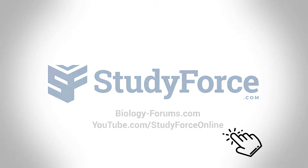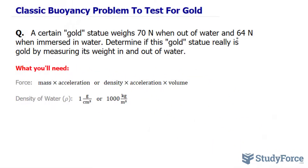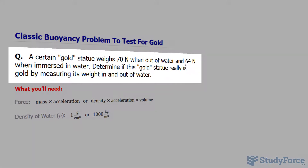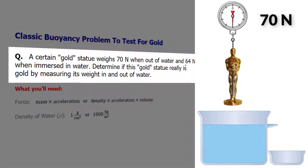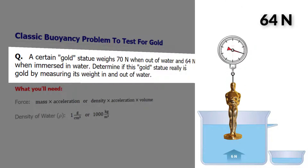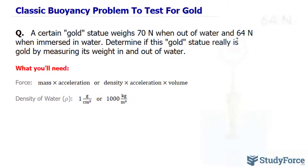In this lesson we'll look at a classic buoyancy problem involving how to test for gold using the Archimedes principle. A certain gold statue weighs 70 newtons when out of water and 64 newtons when immersed in water. We need to determine if this gold statue really is gold by measuring its weight in and out of the water. The game plan is to find the density of this metal and compare it to the known density of pure gold — if there is a match, then the statue is real gold.